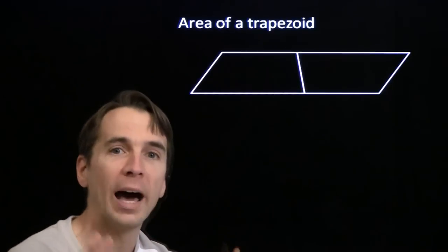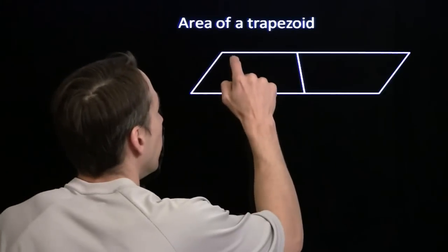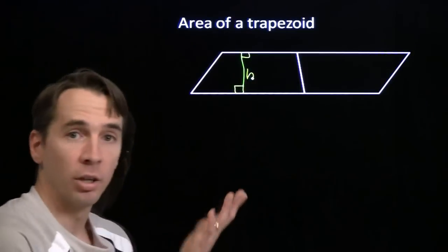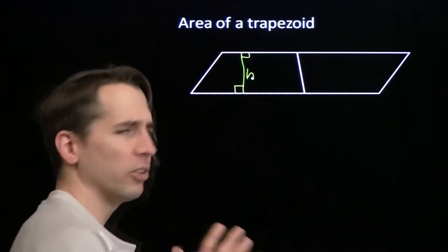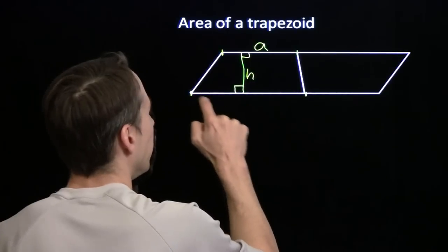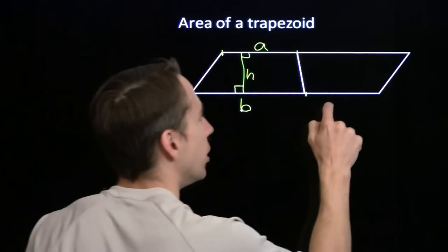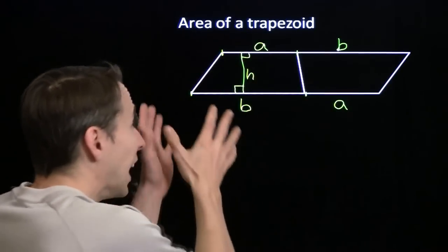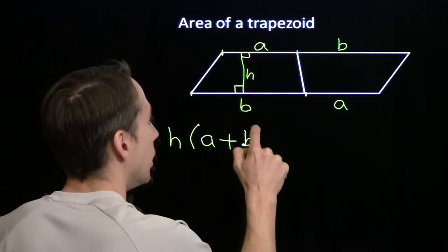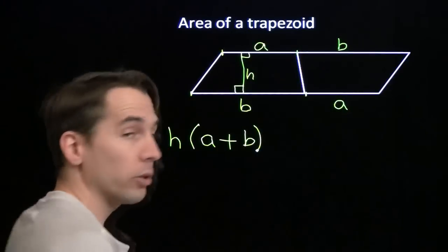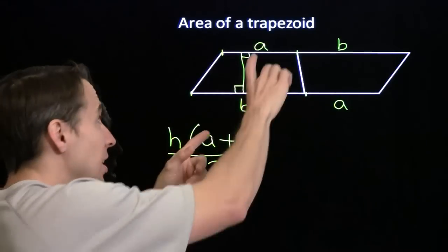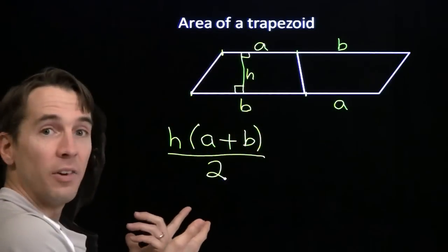This is a parallelogram, and we know how to find the area of a parallelogram. We just take the height and multiply by the length of the base. Now let's see how we're going to express the length of this base in terms of our trapezoid. The top part we'll call A, and the piece down here we'll call B. So when we flip this trapezoid around, the bottom is also A and the top is B. So the area of the whole parallelogram is the whole base times the height — that's H times (A plus B). But there are two trapezoids here, so the whole parallelogram is two trapezoids. So the area of the trapezoid is just half the area of the parallelogram — the height times the sum of the two parallel sides, divided by two.